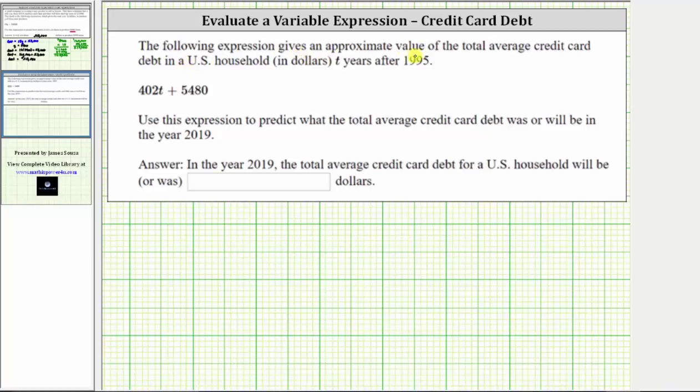The following expression gives an approximate value of the total average credit card debt in a U.S. household in dollars, T years after 1995. The expression is 402T plus 5,480. It's important to recognize here that T is not the year, T is the number of years after 1995.